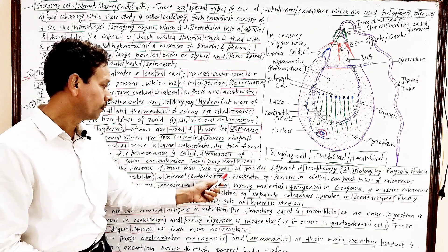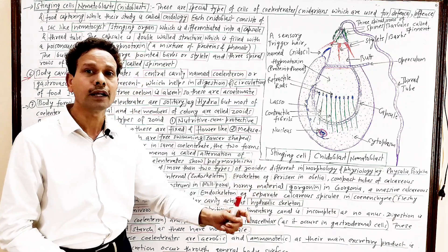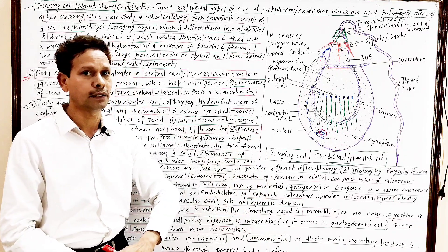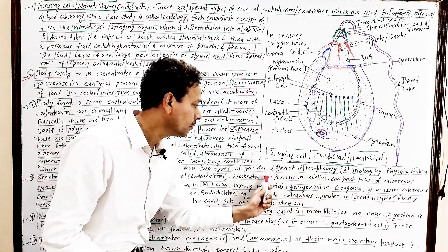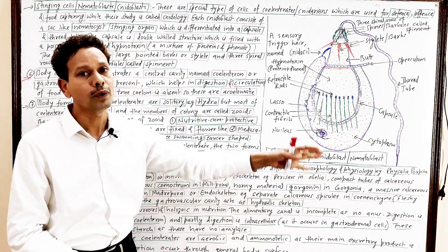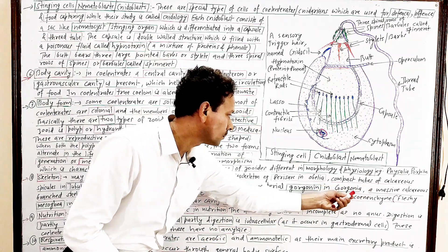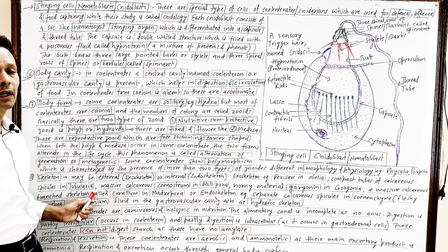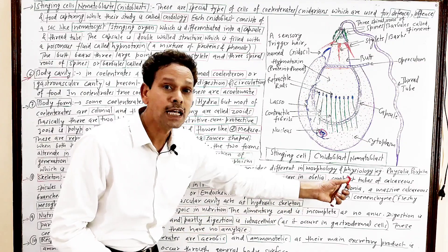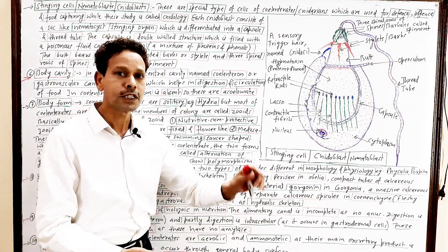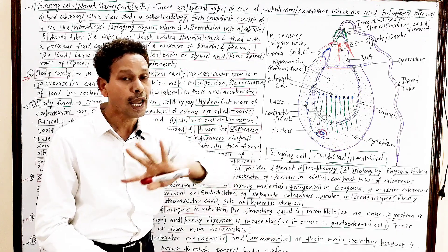As in this Obelia colony, the exoskeleton is in the form of perisarc. Perisarc. And this exoskeleton, perisarc, which encloses the entire body. In case of Tubularia, in this Tubularia, massive calcareous exoskeleton in the form of tubes, they produce exoskeleton.